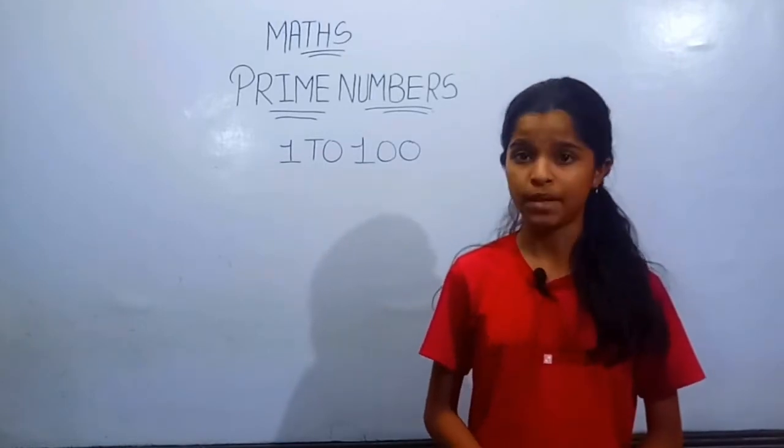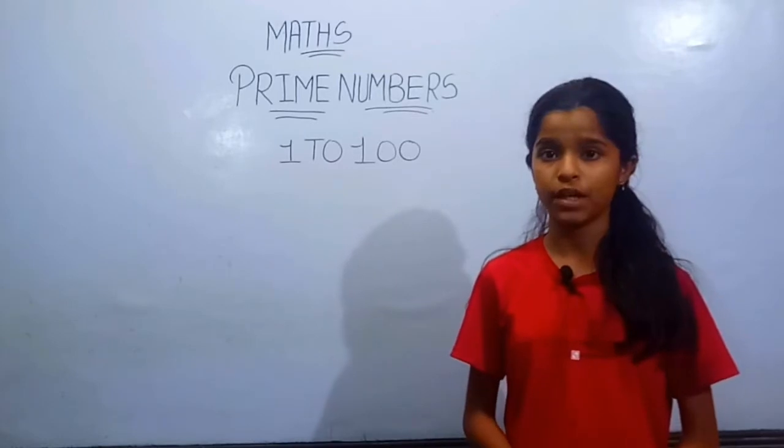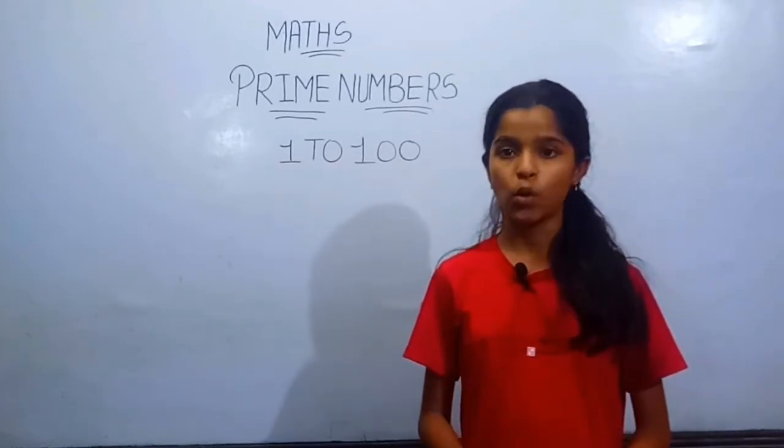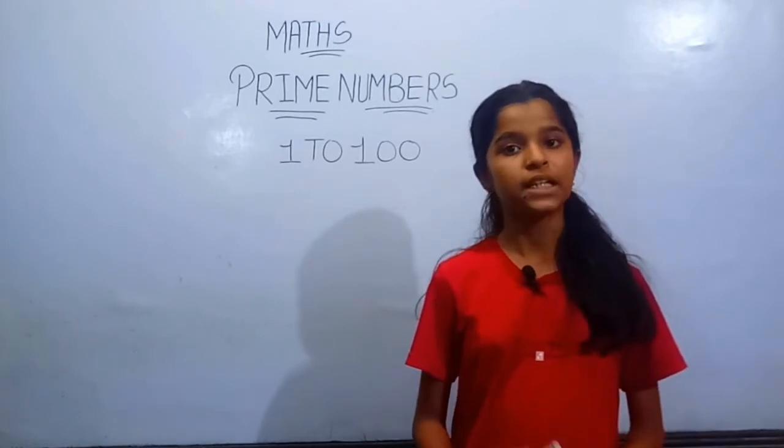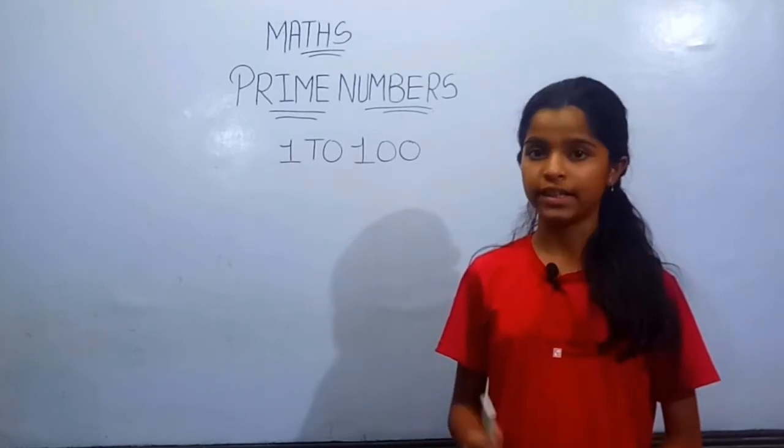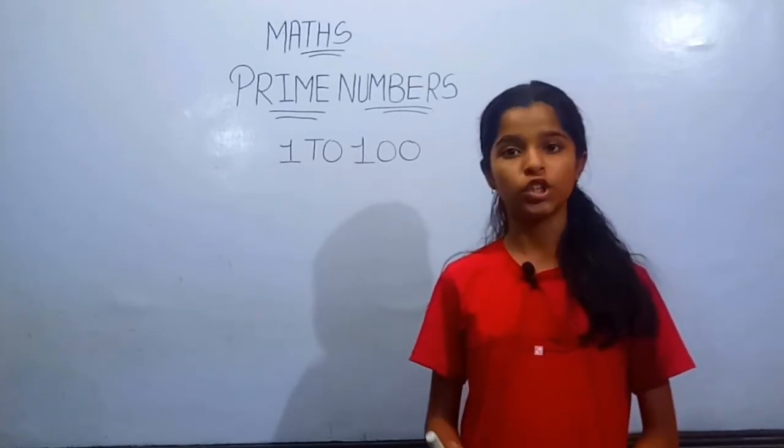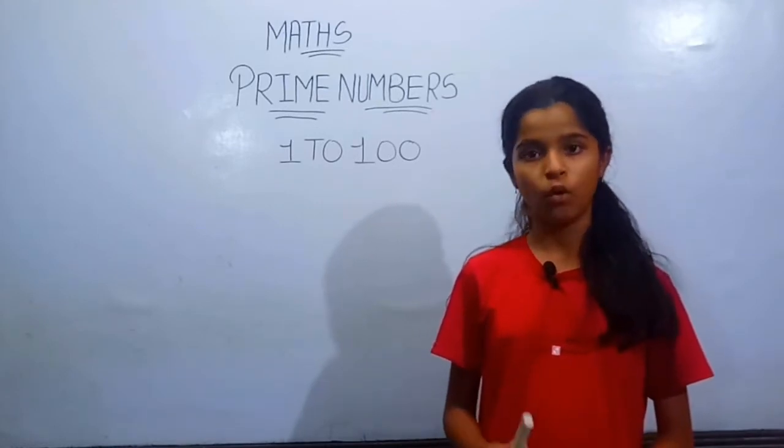What does mean by prime number? A prime number means a number which only goes in one's table and the table itself. The number that doesn't go in any of the table but only the table of one and its table only.